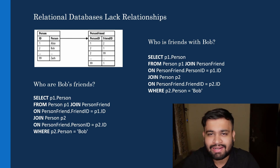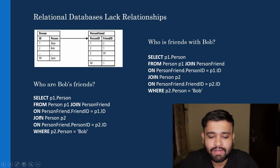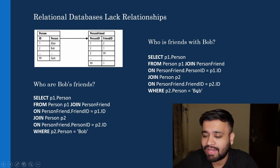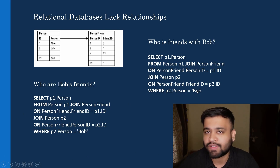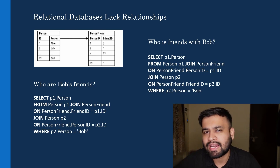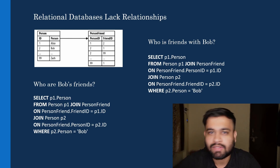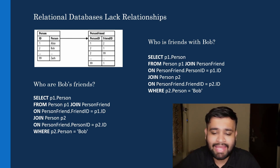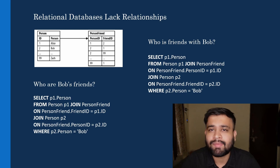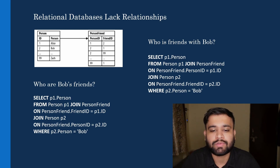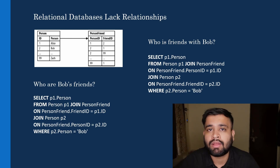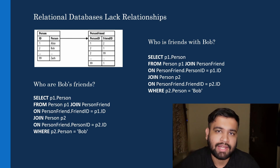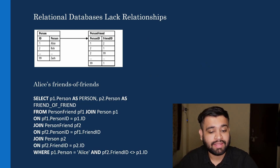Now let's look at the reciprocal — who considers Bob to be their friend? From the table we know the answer is Alice, because Zach doesn't consider Bob a friend. The query itself looks simple — just swapping friend_id and person_id positions — but on the database side it requires scanning the entire person-friend table, so performance will degrade as we reach millions of records.